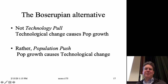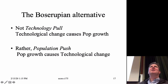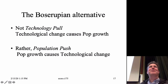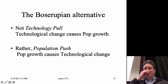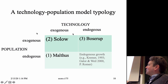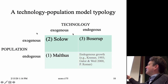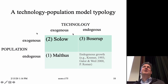The alternative is the Boserupian view — population is pushing technology rather than technology pulling population. Boserup views technology as endogenously driven by population, which might be exogenous. In Malthus the population is endogenous. And then there's a fourth class — endogenous growth models — where both population and technology interact. Michael Kramer, who was part of the 2019 Nobel Prize along with Esther Duflo and Abhijit Banerjee, and Paul Romer, 2018 Nobel co-winner, have contributed to these models.